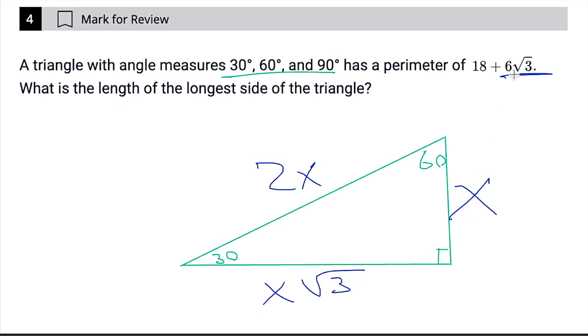Well, if we have 6 root 3 right here and x equals 6, that would all line up, right? 6 root 3, 6, and then 2x would be 12. 12 and 6 is 18, so that totally works, and our answer for this one, since we're asked about the longest side of the triangle, is going to be 12.